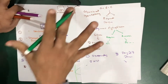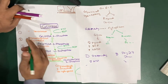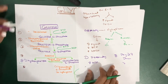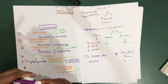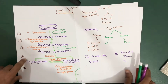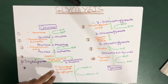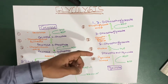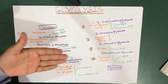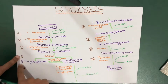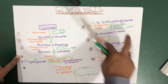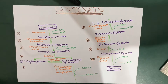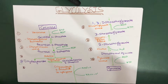Steps one through five are the preparatory phases, in which ATP is invested and the splitting of glucose into two molecules occurs. Steps six through ten are the payoff phase, where we actually get ATP, NADH, and other energy molecules. That's why we call them the payoff phase.